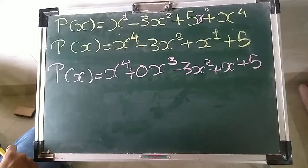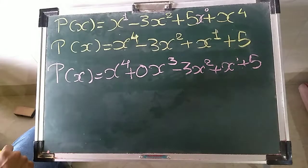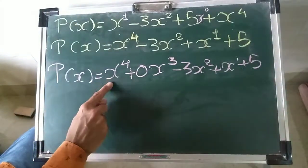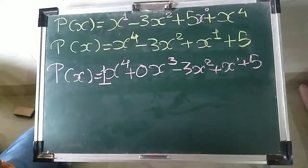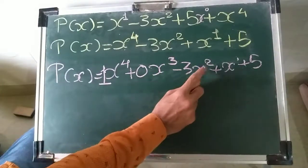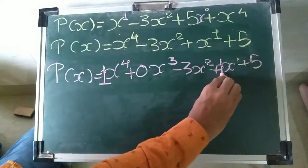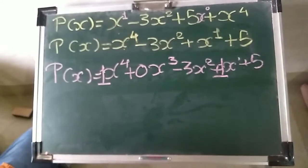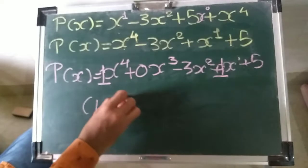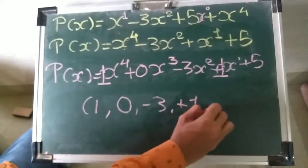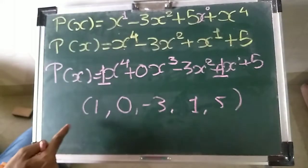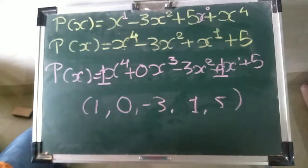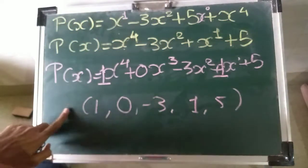The next concept is the coefficient — the number which is multiplied by x in each term. In this index form: x raised to 4 has a coefficient of 1, x raised to 3 has a coefficient of 0, x squared has a coefficient of minus 3, x raised to 1 has a coefficient of 1 (since nothing is written, it is plus 1), and the last term is 5. So the coefficients are 1, 0, minus 3, 1, and 5. Writing these coefficients separated by commas inside circular brackets is known as the coefficient form.